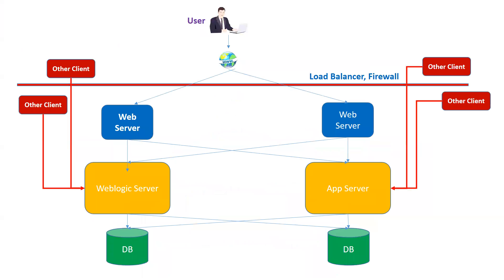This is the basic flow of a request in a highly available architecture. When a user accesses a URL deployed in your application server — specifically WebLogic Server — you have a web server in front of your application server. The request will go to your web server via a load balancer, and maybe in between you have a firewall as well. This hardware load balancer is different from a web server and has different capabilities in terms of request handling and sessions. It sends requests to your web servers, which are configured to forward requests to your back-end WebLogic server, with a database at the back end.